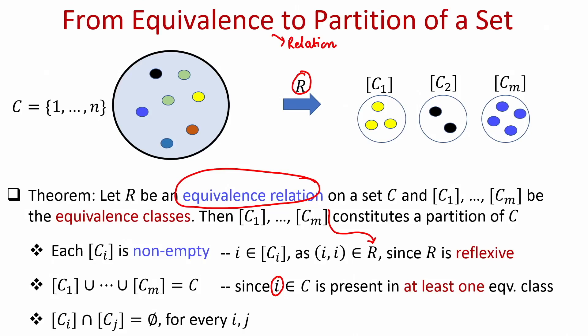The third requirement from the partition was that the various subsets should be pairwise disjoint. In this case I have to show that any two equivalence classes are pairwise disjoint, and that is straightforward because in the last lecture we proved that two equivalence classes are either the same or they are disjoint — you cannot have a common element present in two different equivalence classes — which automatically establishes that these subsets are pairwise disjoint. So we have proved that given any equivalence relation, the collection of equivalence classes constitutes a partition of the original set.